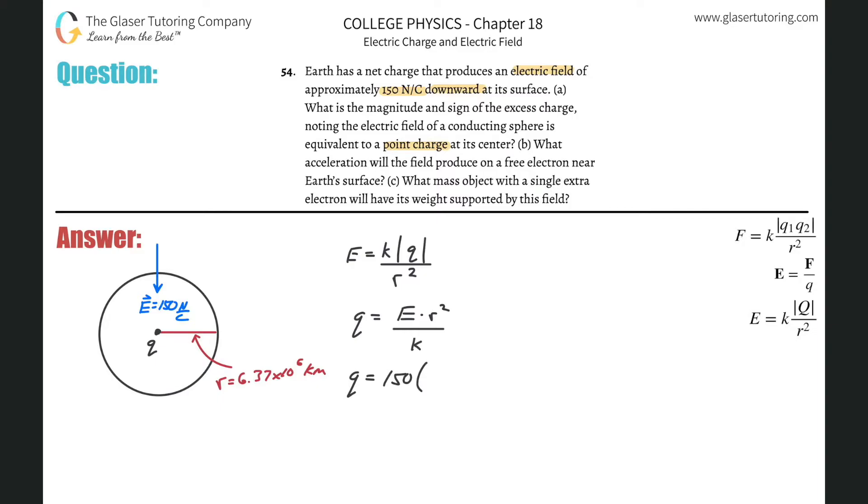So we can basically just plug in the values. So this is 150. The radius is going to be 6.37 times 10 to the sixth squared, all divided by 8.99 times 10 to the ninth. And let's throw it into the calculator. So 150 times 6.37 times 10 to the sixth squared divided by 8.99 times 10 to the ninth. And what do we get? We get about 6.77.